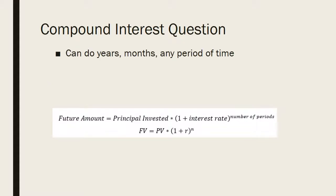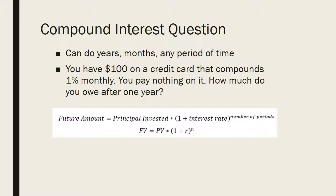We're not confined to just years — we could do months, quarters, or six months. We just need to adjust so that the rate and number of periods match. For example, if you have $100 on a credit card that compounds at 1% monthly and you pay nothing on it, how much do you owe after one year? You would have 100 × 1.01^12.